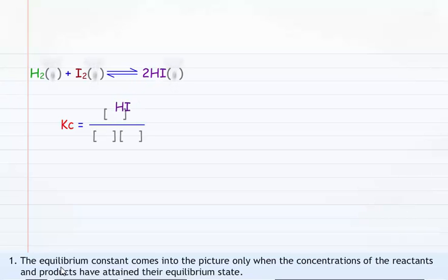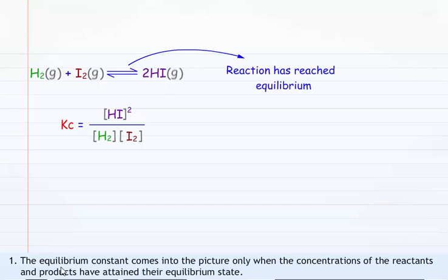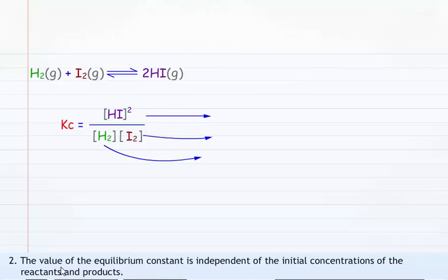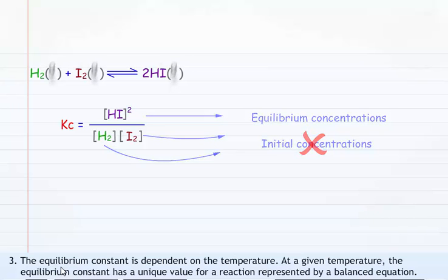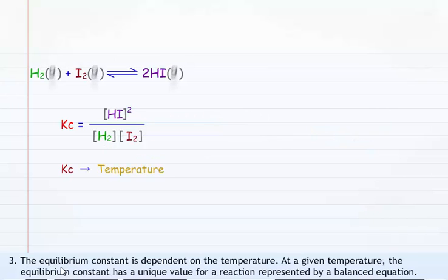Let us first summarize the features of equilibrium constants that we have seen so far. The equilibrium constant comes into the picture only when the concentrations of the reactants and products have attained their equilibrium state. The value of the equilibrium constant is independent of the initial concentrations of the reactants and products. The equilibrium constant is dependent on the temperature. At a given temperature, the equilibrium constant has a unique value for a reaction represented by a balanced equation.